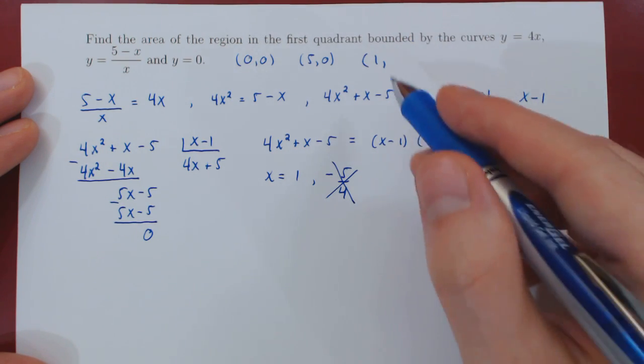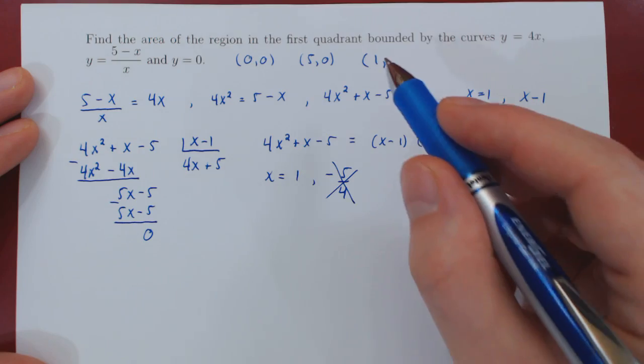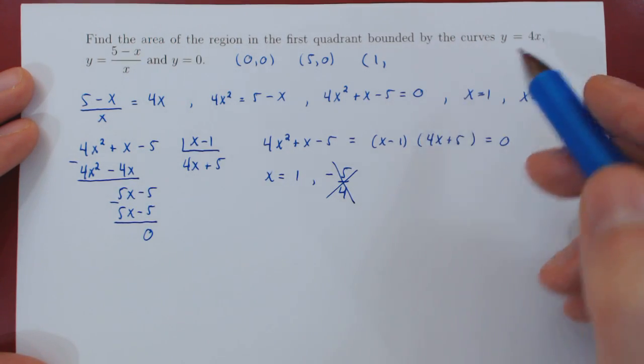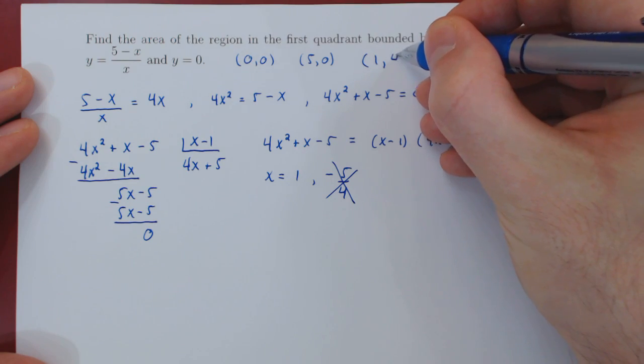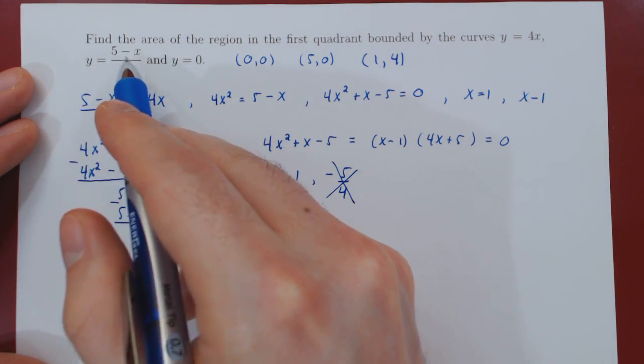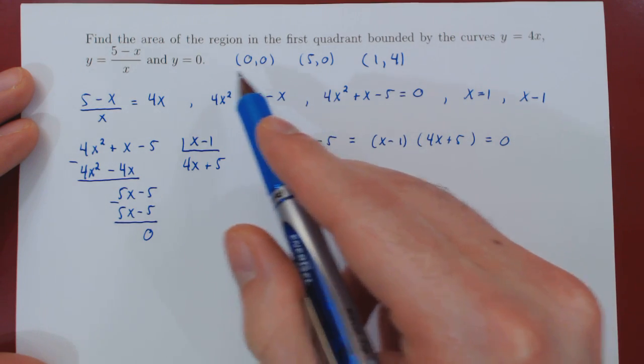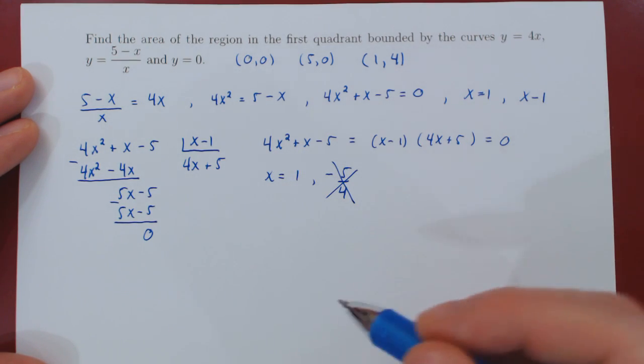We need now the y value of this point of intersection. Let's verify that in both cases we obtain the same y value. 4 times 1 is 4. 5 minus 1 is 4 over 1 is 4. So we have our three points of intersection and we're good to go.